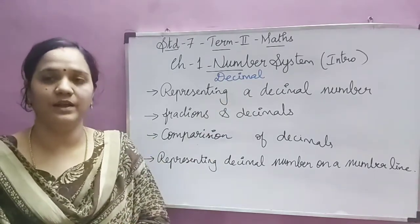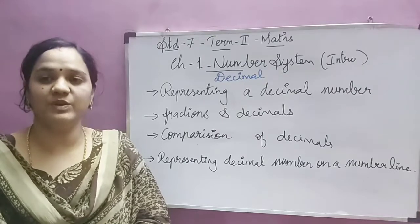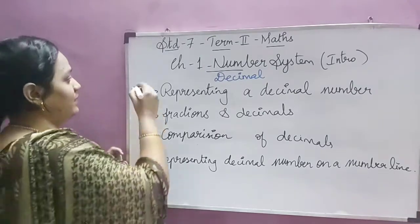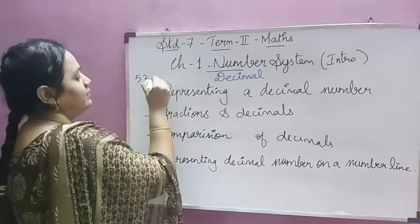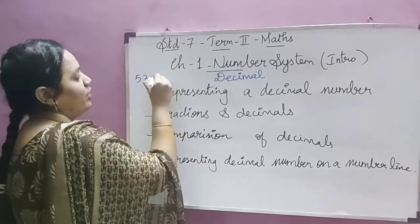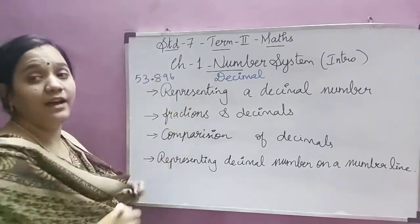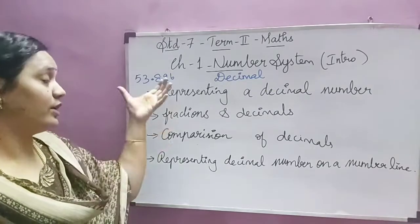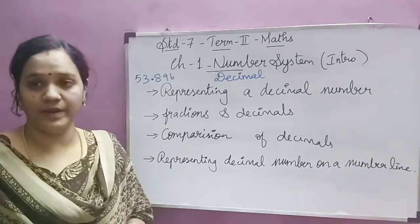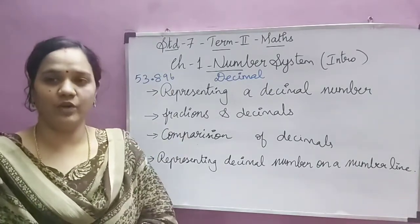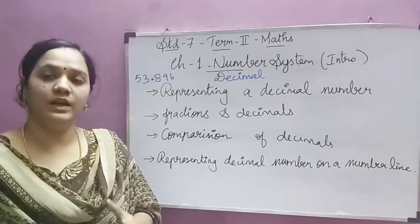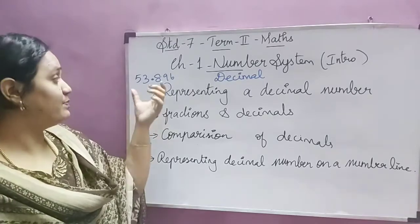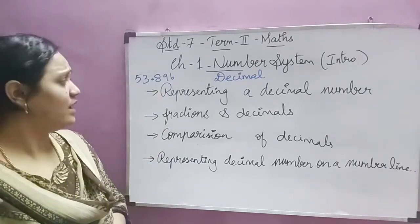Decimal numbers is nothing but numbers with points. For example, 53.896 — this is a decimal number. You might have seen these numbers before, but now in this term we are going to learn clearly about these numbers and their place value.